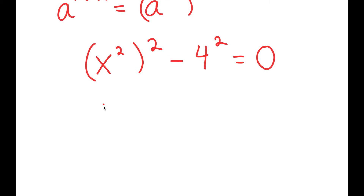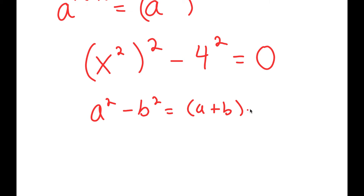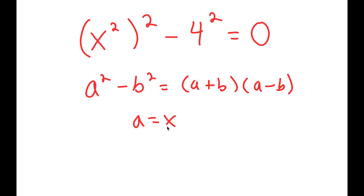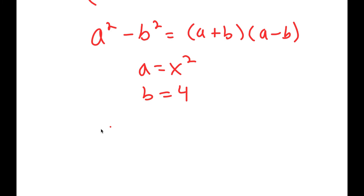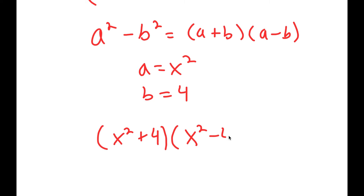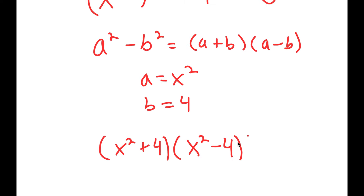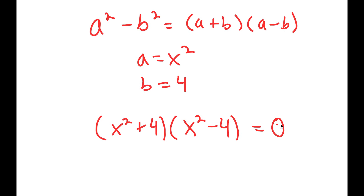Now, if I have something in the form a squared minus b squared, this is equal to a plus b times a minus b. So here a equals x squared and b is 4, meaning I get x squared plus 4, times x squared minus 4, is equal to 0.